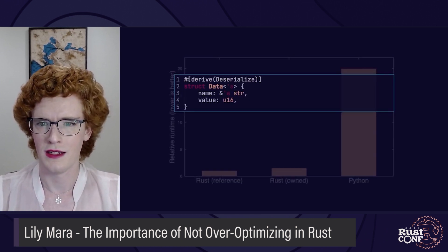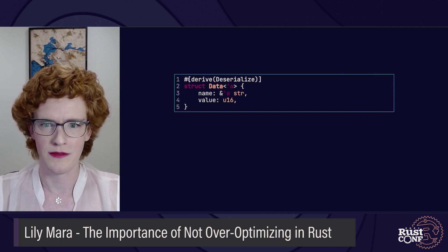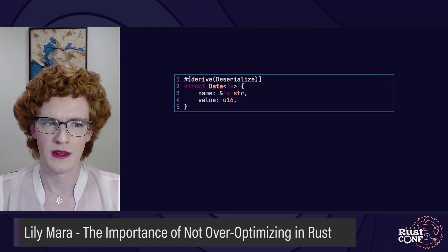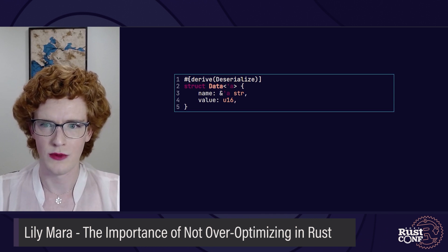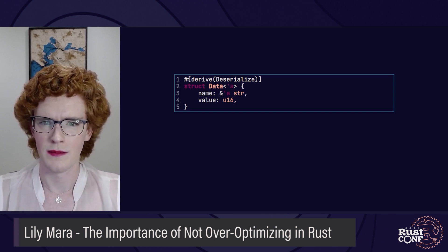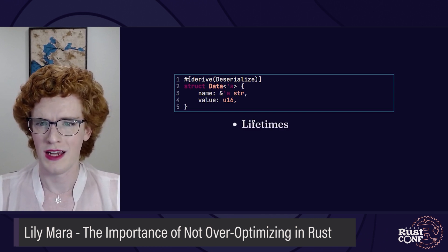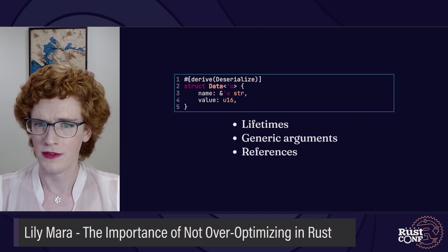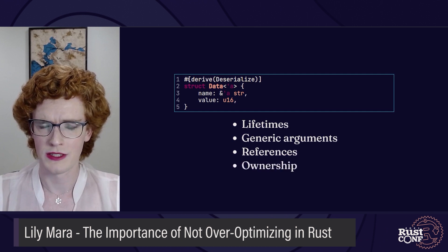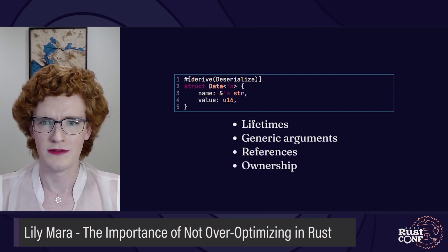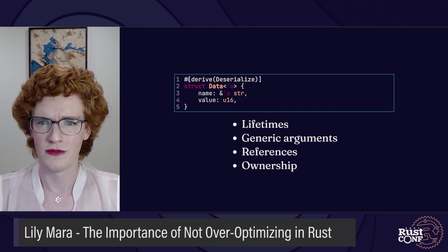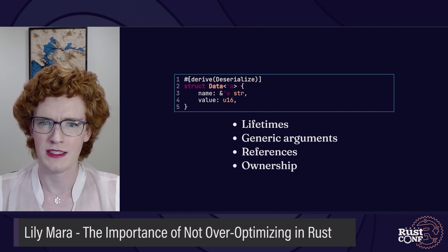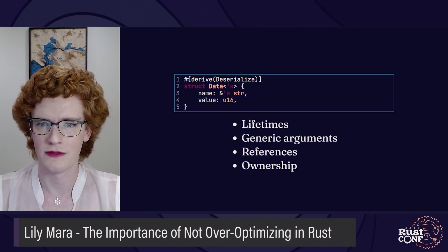It may not seem like it if you've been writing Rust for a while, but there are a lot of new ideas hiding in this struct definition. If you wanted to understand this as a new Rust developer, you would need to learn about lifetimes, which implies learning about generic arguments and references. References implies learning about ownership. Ownership is famously one of the most difficult things for new Rust developers to learn. Now it's just one of four difficult topics facing Gene if they want to graduate from writing so-called slow Rust code.